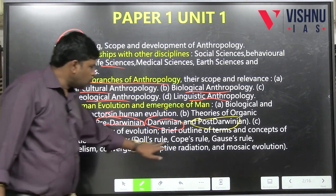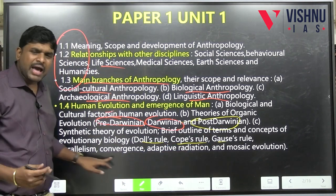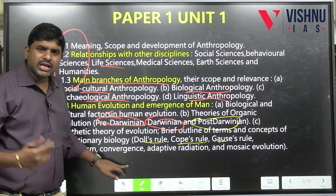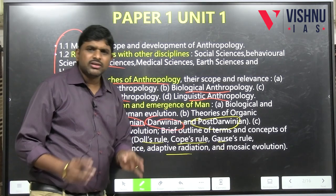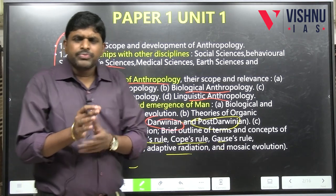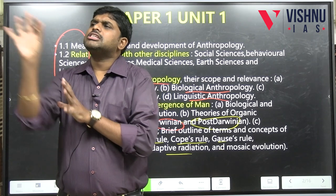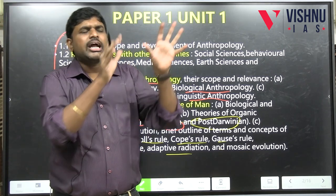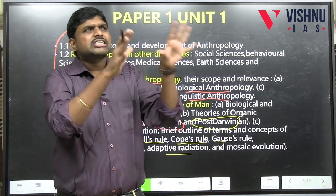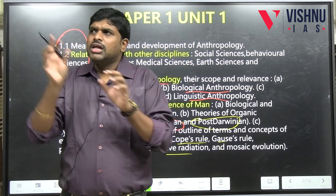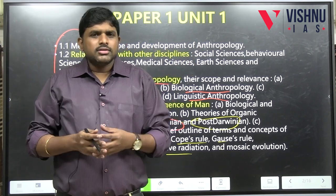There are evolutionary trends to study: Dole's rule, Cope's rule, Gauss rule, parallelism, convergence, mosaic evolution, and adaptive radiation. Each concept is explained in two lines. People who answer these evolutionary patterns and trends get more marks.